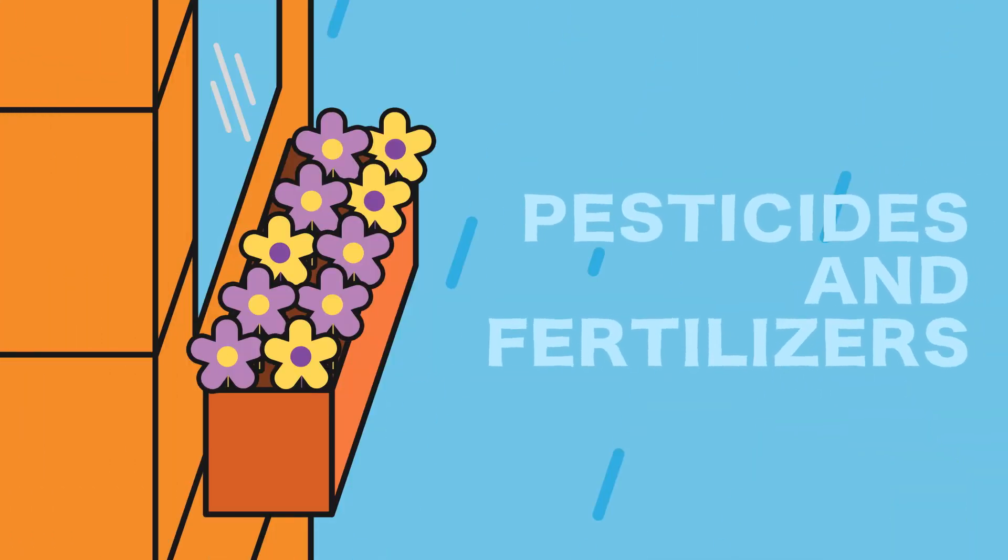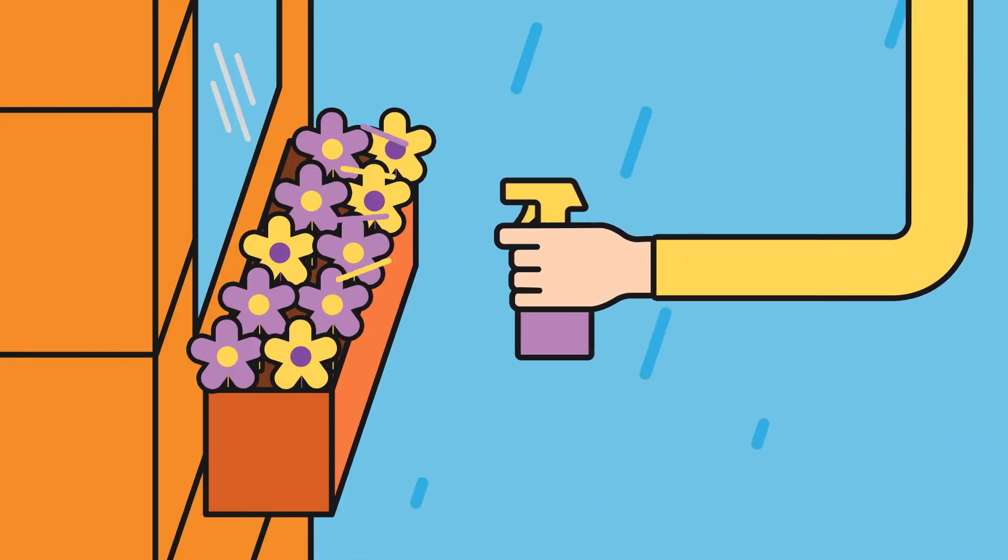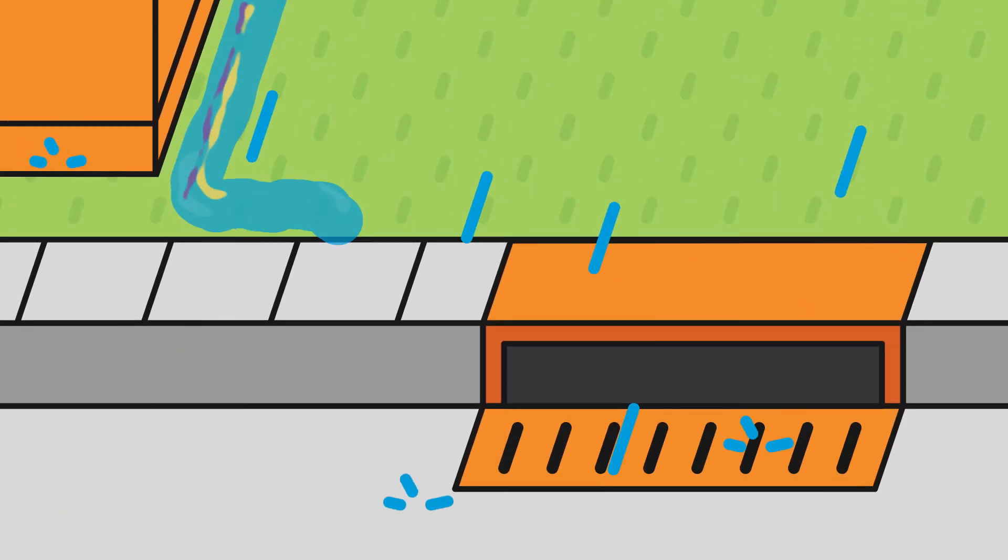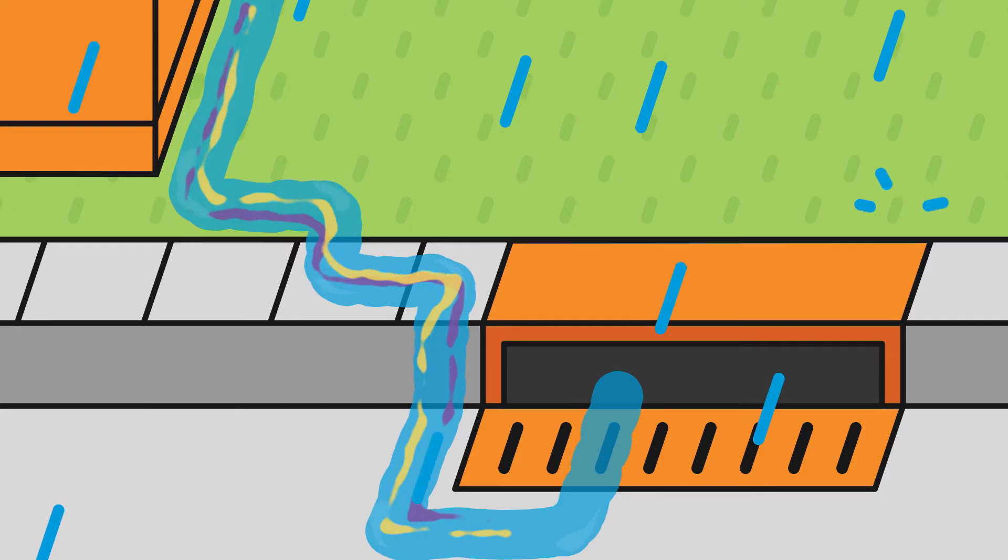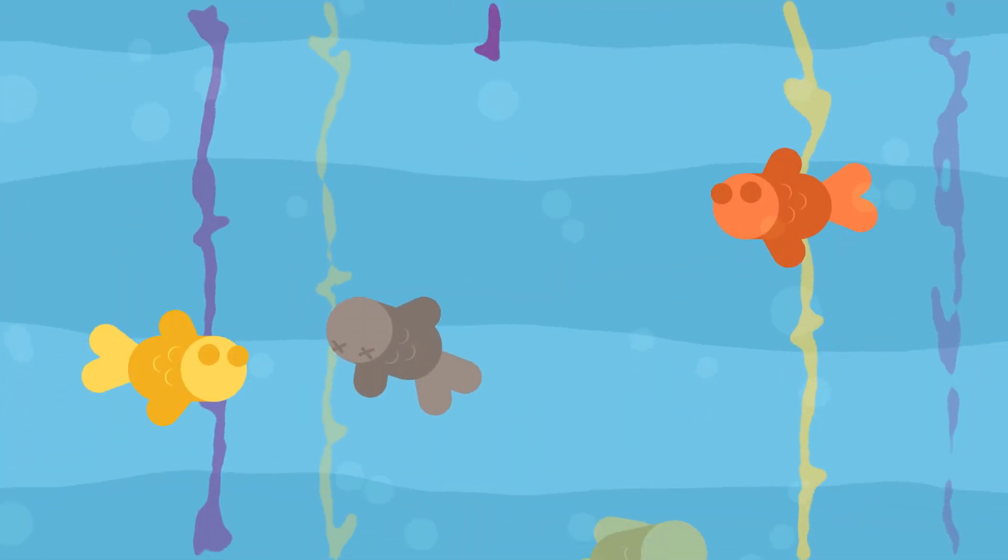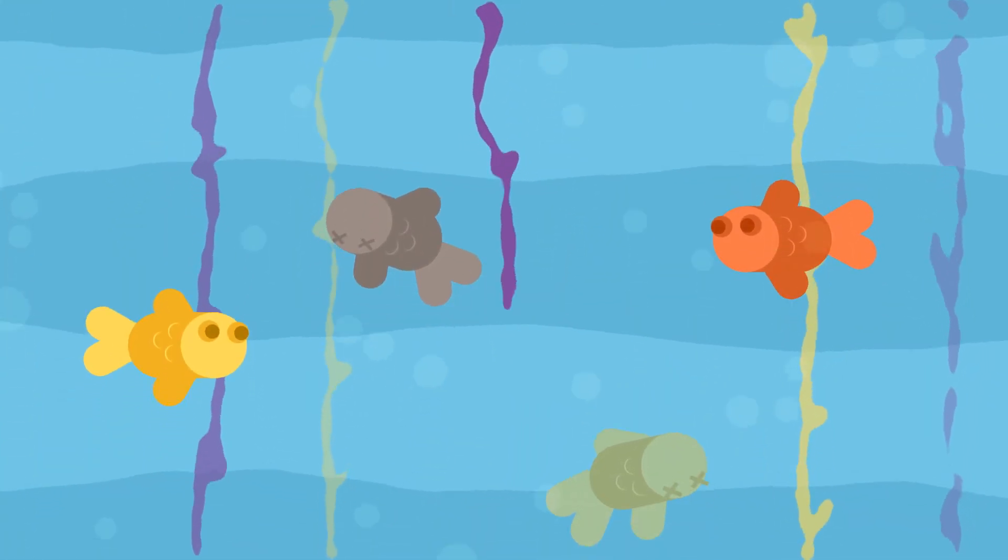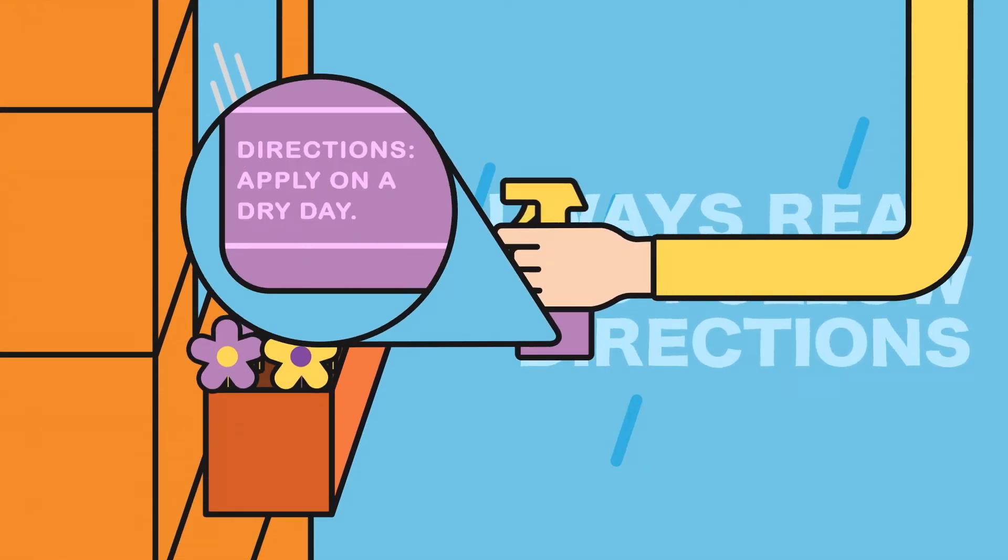Pesticides and fertilizers. Using too much pesticides and fertilizer doesn't help your plants grow, and it sure hurts the environment too. These chemicals wash into the storm drains and cause toxic algae to build up and kill fish. Always read and follow the directions carefully.